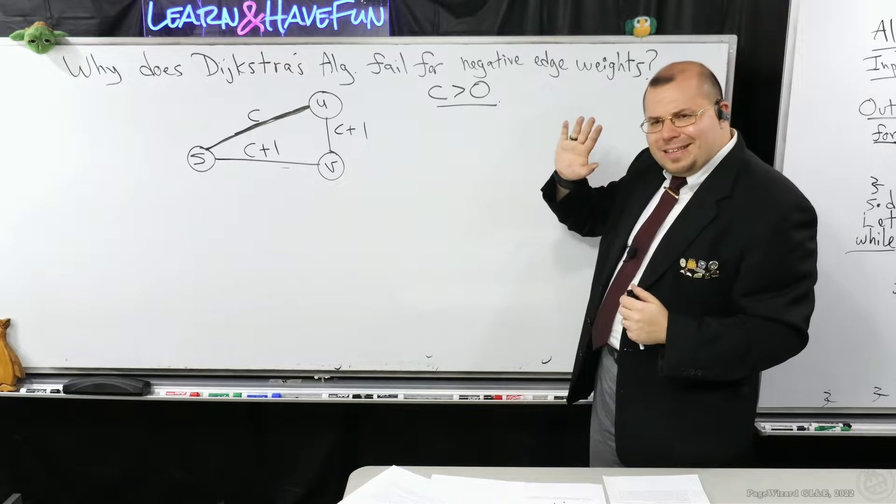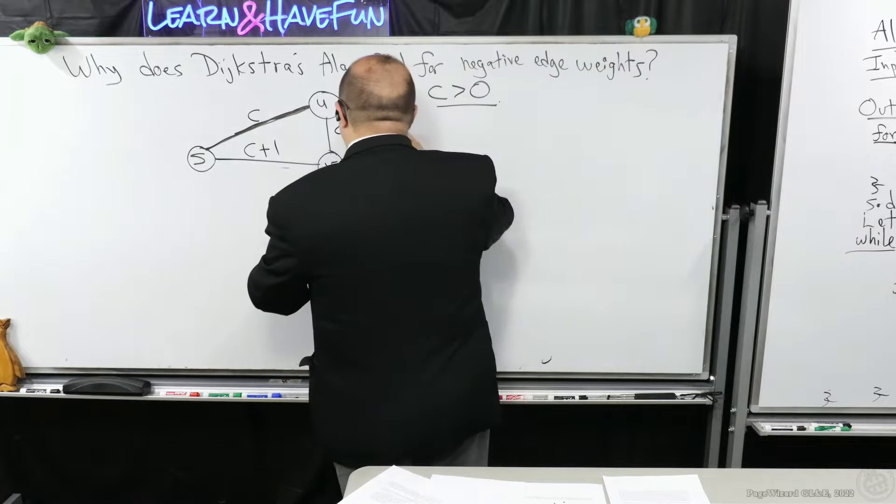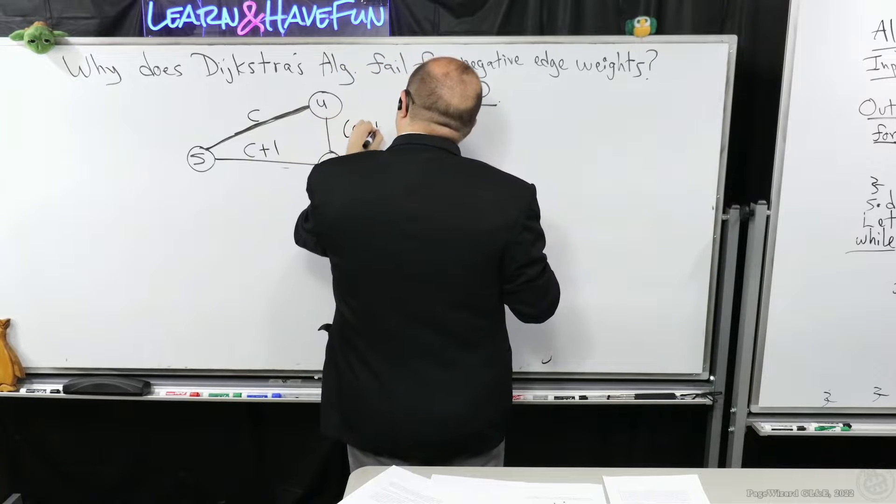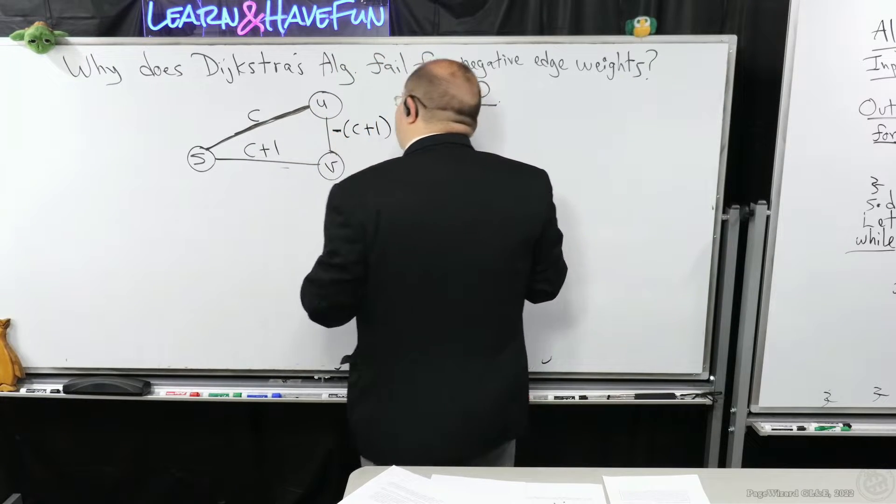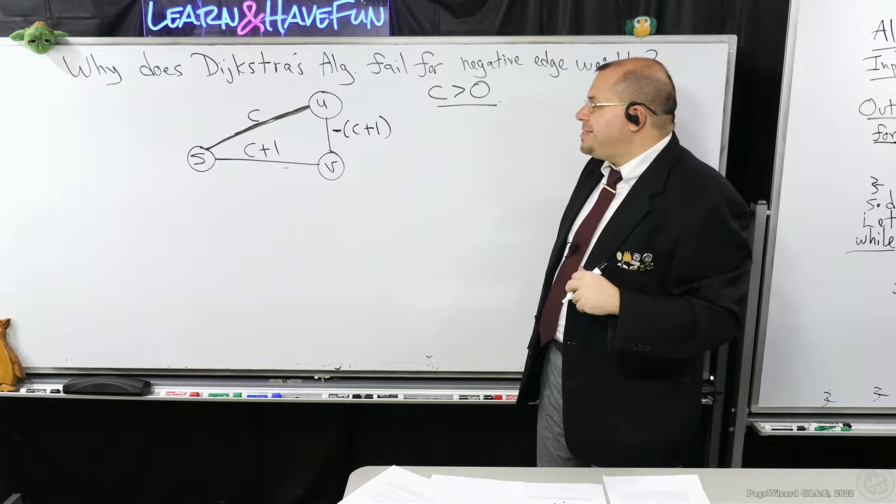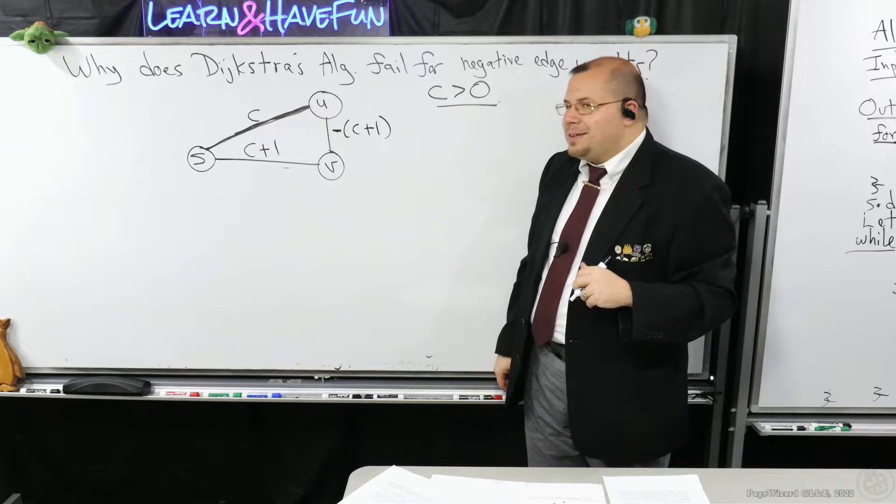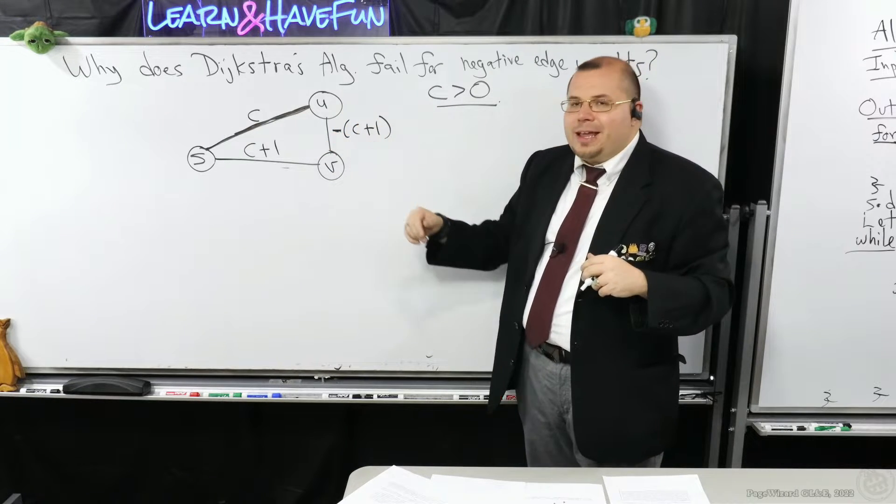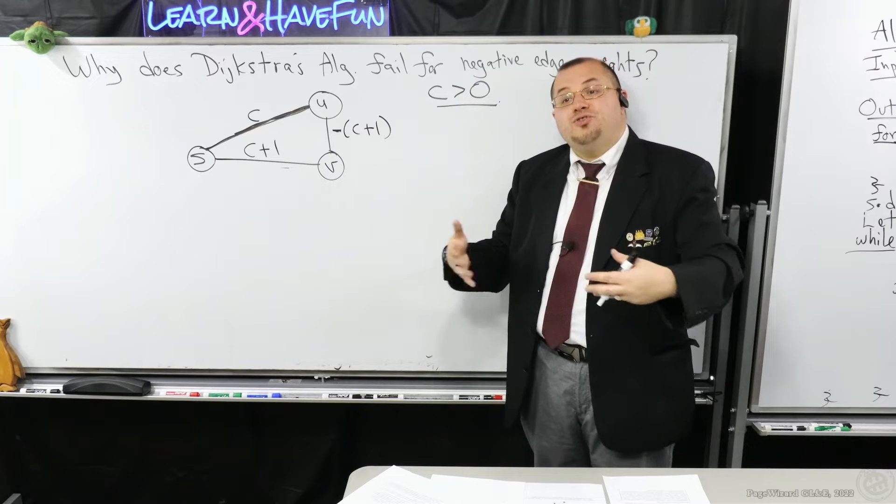So let's make this a little bit more funky. Let's change this edge weight from C plus 1 to be minus C plus 1. So is it still true that S U, the path S U, is in fact the shortest S U path?